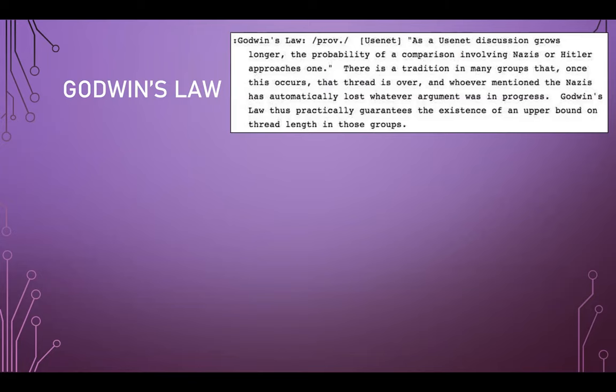We're finishing up freedom of speech, then moving on to digital citizenship. We still need to cover the Fourth, Fifth, and Sixth Amendments. Last time we were talking about online discourse — how we live in a time that is simultaneously ancient and new — and immutable laws that seem as old as the internet itself, such as Godwin's Law.